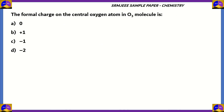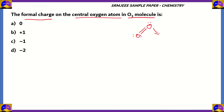Now let's look at a chemistry question. The formal charge on the central oxygen atom in an O3 molecule is — to understand this, let's draw the structure of O3. We have the central atom, with a couple of bonds towards one oxygen atom, and a coordinate bond towards the other. The terminal atoms have three lone pairs and two lone pairs respectively, and the central atom has one lone pair.